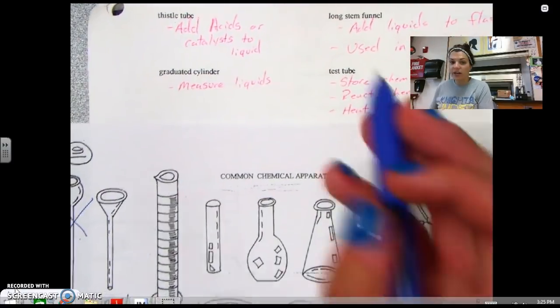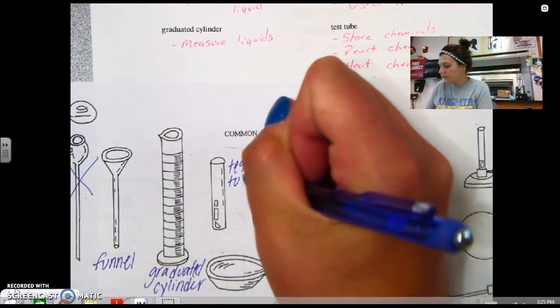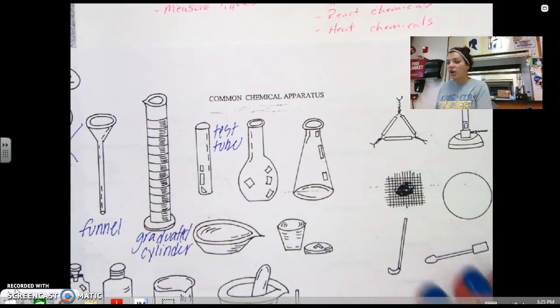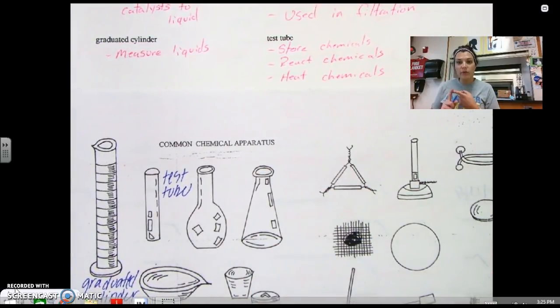The next thing that we have here is our test tube. This is what we're going to use most of the time. And obviously, you can see that we can do multiple things with test tubes. We can store chemicals inside of a test tube, we can react chemicals inside of a test tube, we can use it and hold it over a Bunsen burner and heat chemicals up inside of a test tube. So it does a lot of different things for us.